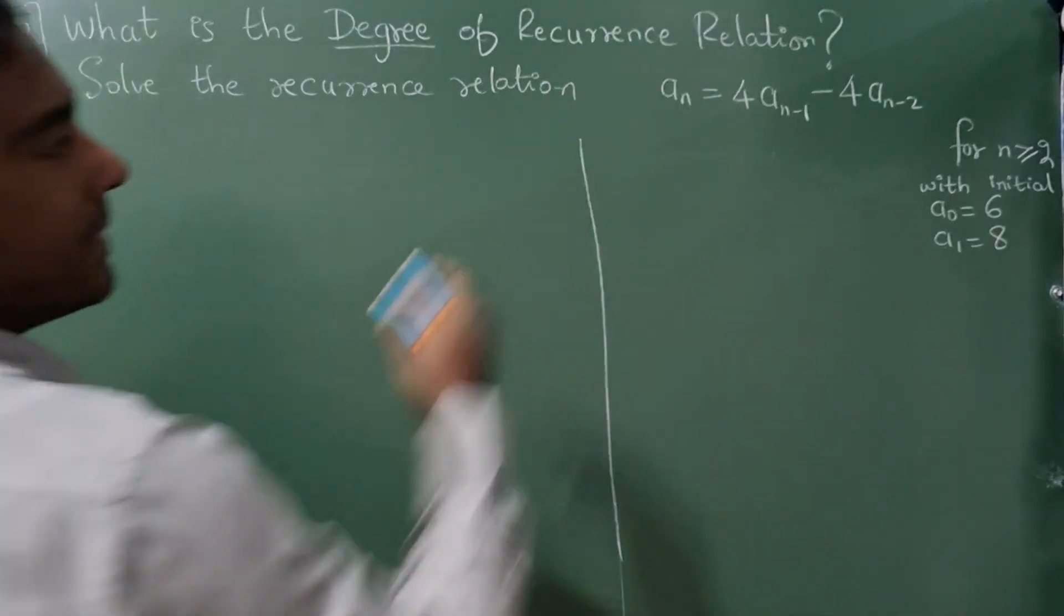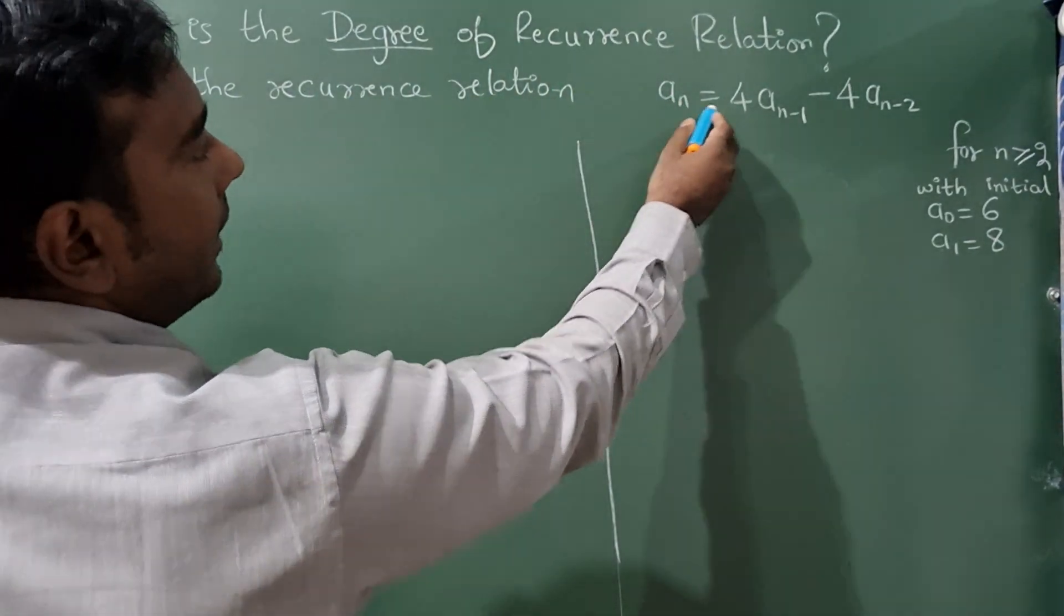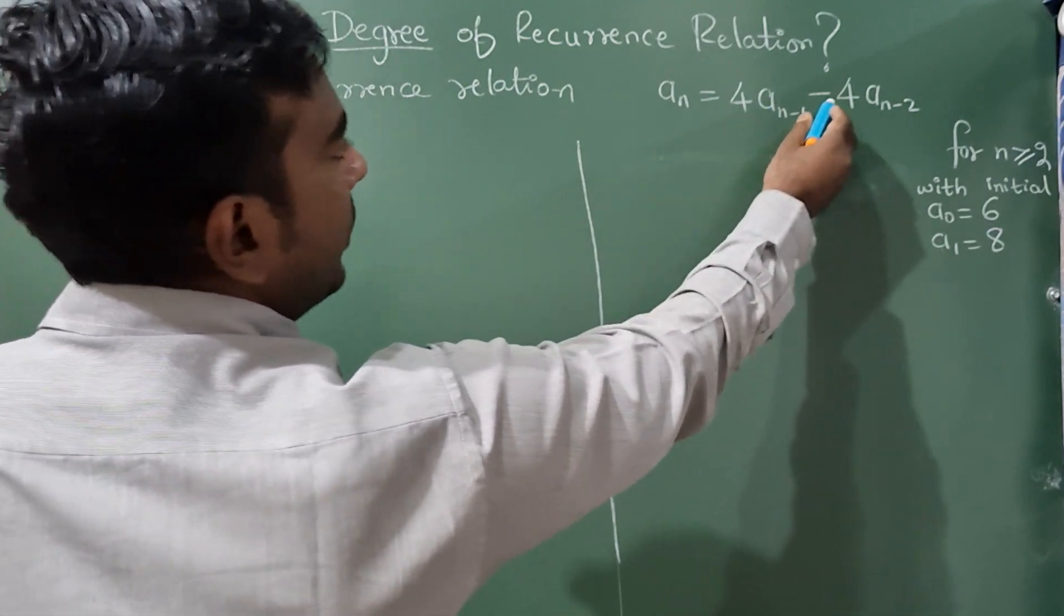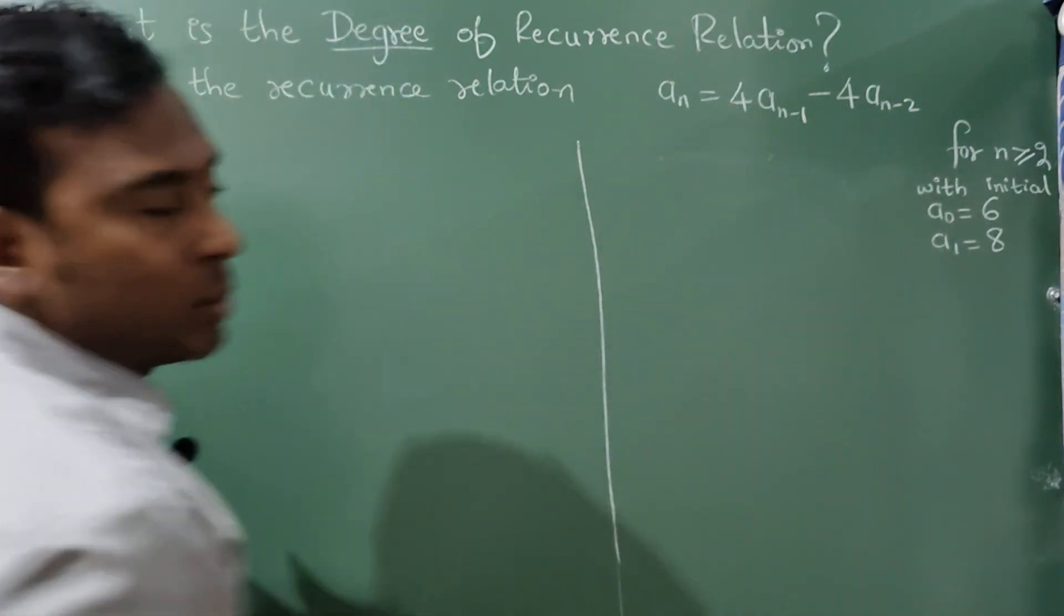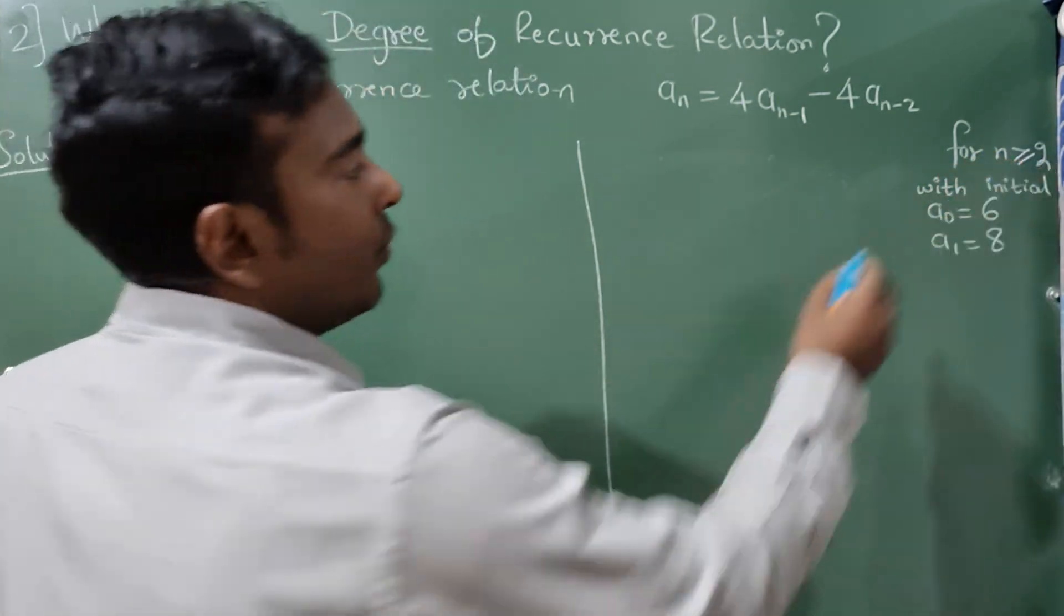What is the degree of recurrence relation? Solve the recurrence relation aₙ = 4aₙ₋₁ - 4aₙ₋₂ for n ≥ 2 with initial condition a₀ = 6, a₁ = 8.